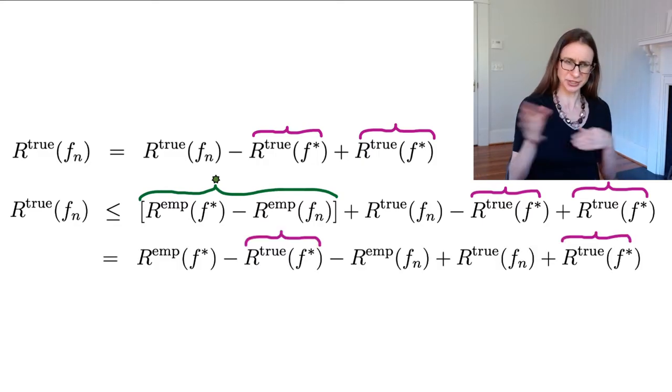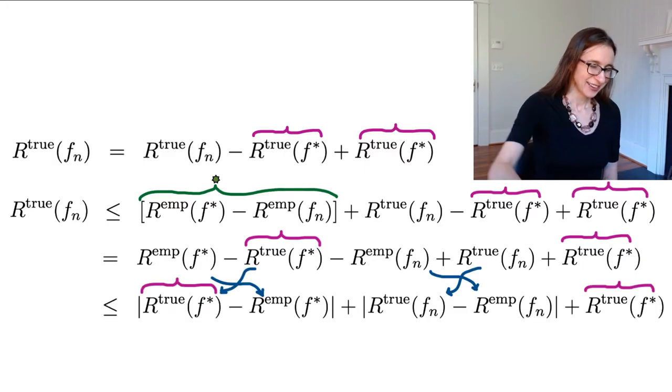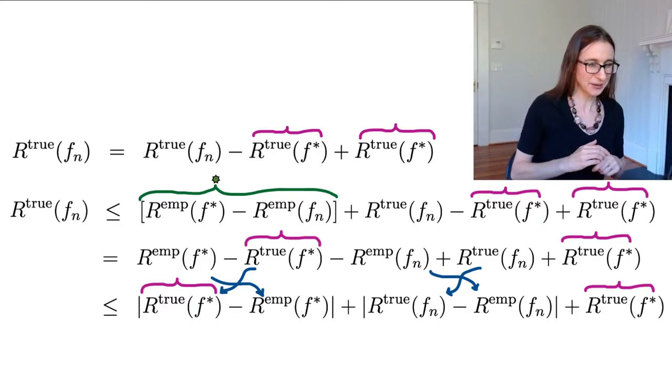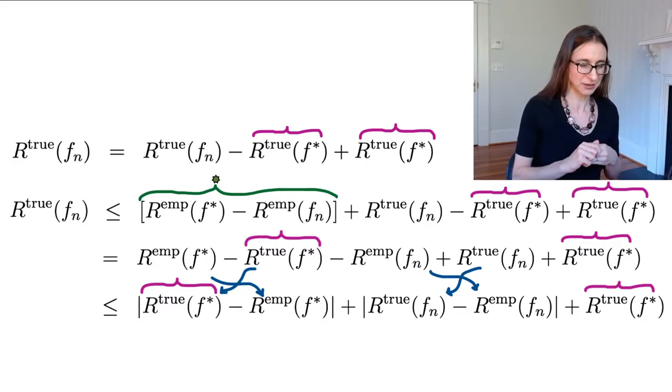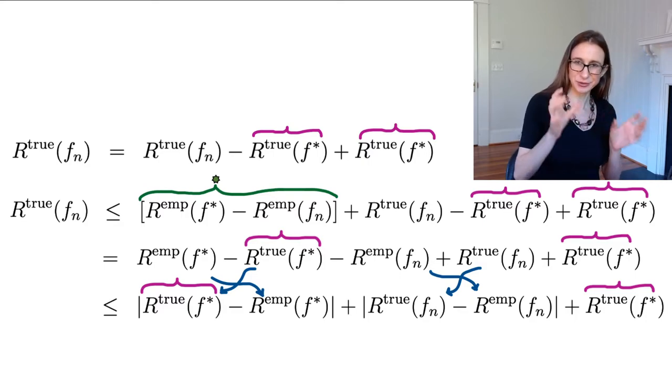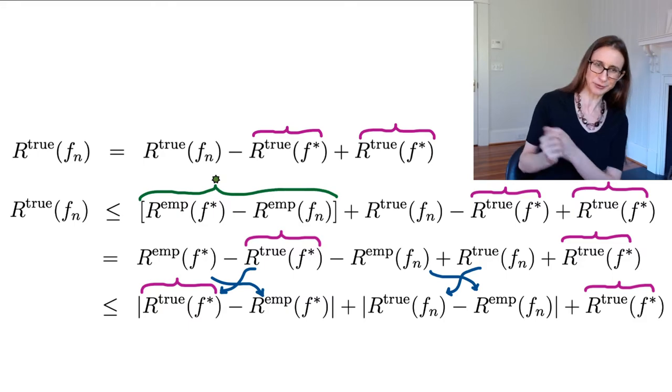I just rearranged the terms and now you can see where they are. And then here I rearranged the terms again and then put absolute values there on them just so that I could group them into terms, each of which I can use the Occam's razor bound for.